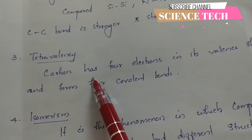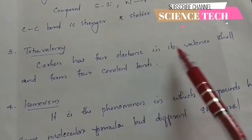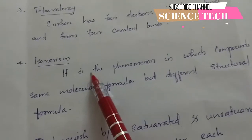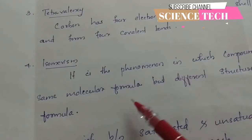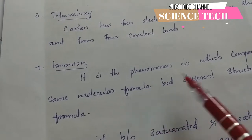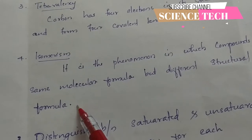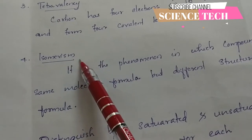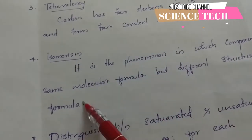The third point is tetravalency. Carbon has the capacity to form four covalent bonds. Then there are isomers — compounds having the same molecular formula but different spatial arrangements. This ability to form isomers also contributes to the uniqueness of carbon as a component.